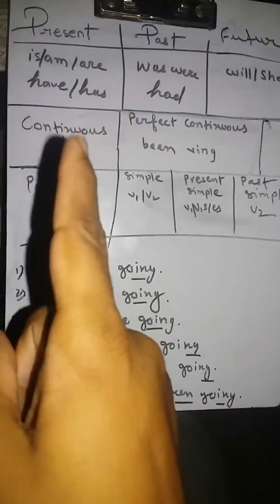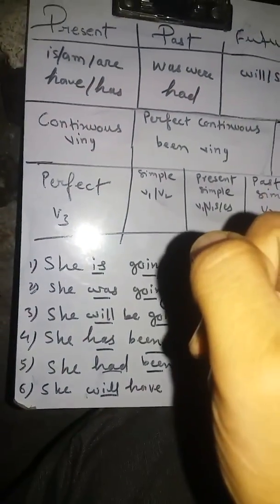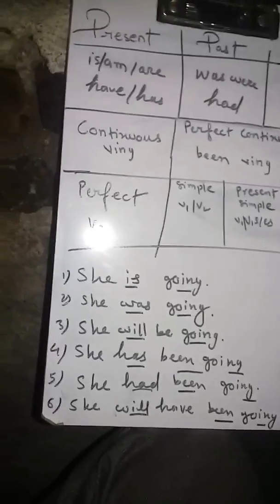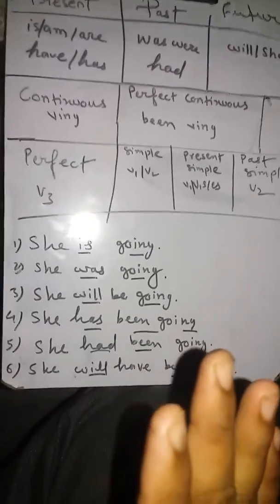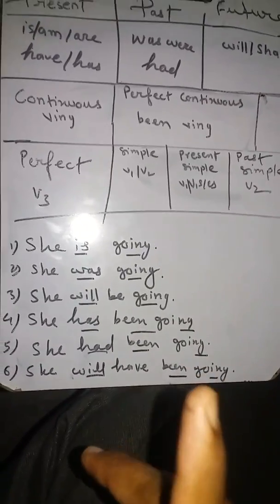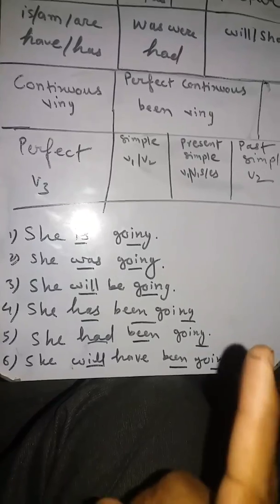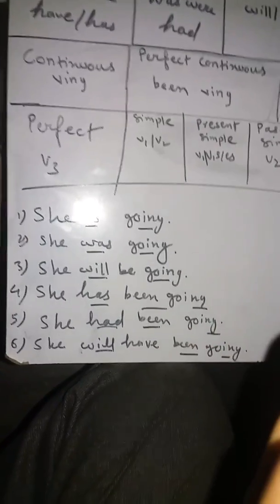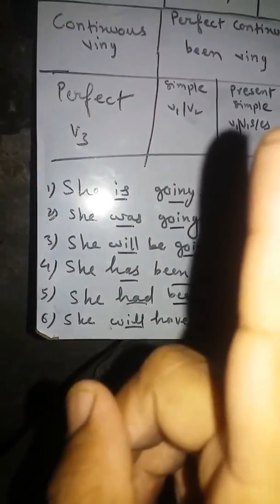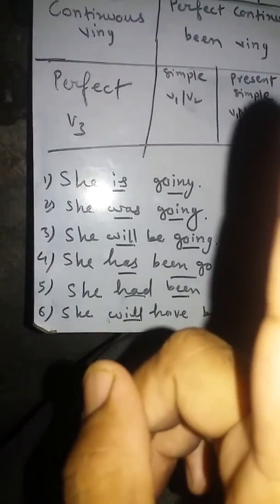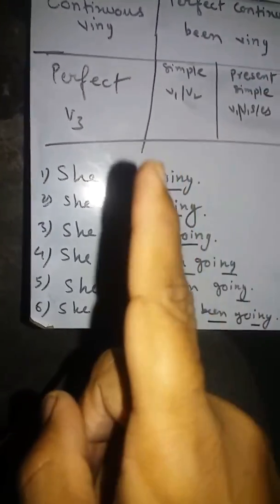Now tense form: if you locate the -ing form of the verb in a sentence following any helping verb, it is continuous only. But when you see been + -ing form, it is perfect continuous. V3 — when you locate the third form — it is perfect tense. V1 or V2 — when you locate these — it is simple tense.